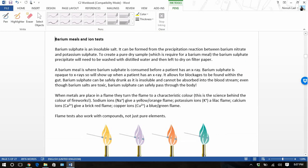You might be asked about barium meals and ion tests. Barium sulfate is an insoluble salt. It can be formed when the precipitation reaction happens between barium nitrate and potassium sulfate. To make a pure dry sample of it, which is required for a barium meal, the barium sulfate precipitate will need to be washed and then distilled and left to dry on paper. Barium meal is when barium sulfate is consumed by a patient for an x-ray. Barium sulfate is opaque to x-rays, so it will show up when a patient has an x-ray. This has blocked the x-rays. It allows for blockages to be found within the gut. Barium sulfate can be safely drunk and, as it is insoluble, can't be absorbed by the bloodstream, even though barium salts are toxic.